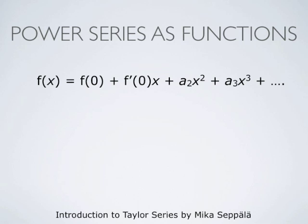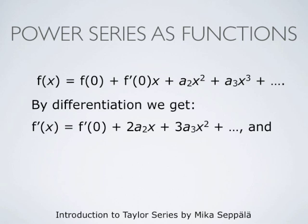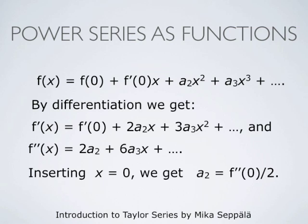Next we look at the coefficient a2. By differentiation we get that the derivative of f at x is f prime at 0 plus 2 times a2 times x plus 3 times a3 times x squared and so forth. Inserting x equals 0, we get a2 equals the second derivative of f at 0 divided by 2.